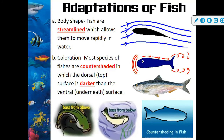Regarding adaptations of fish — body shape: fish are streamlined, which allows them to move rapidly in the water. We'll get into different types of body shape and why body shape correlates to where a fish lives later, probably next week. Coloration: most species of fish are counter-shaded, meaning the dorsal top part of the fish is darker than the ventral underneath surface — you can see that on the fish pictured on the right.